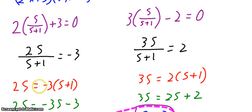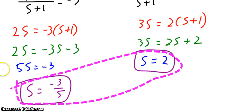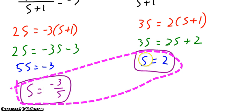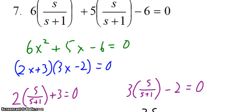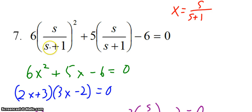This one becomes two s equals negative three times s plus one, and here I get three s equals two times the quantity s plus one. Distribute the negative three, distribute the two, bring all the s's over to one side and solve. So I get s equals negative three-fifths and s equals two. Because this is a rational equation, I do have to check for extraneous solutions — I need to make sure that plugging in positive two or negative three-fifths for s does not give zero in the denominator. It doesn't, so both solutions are good.